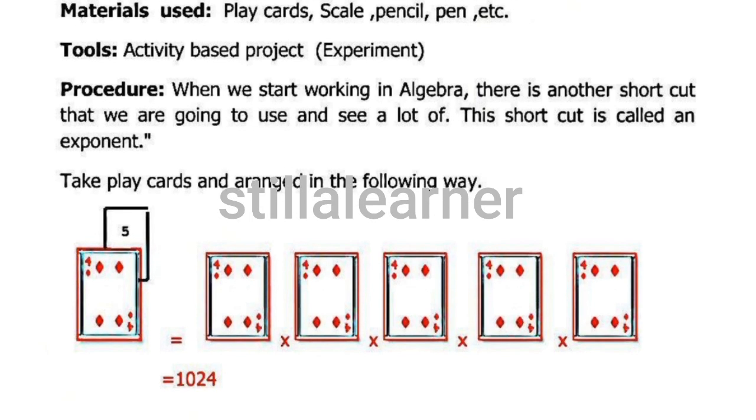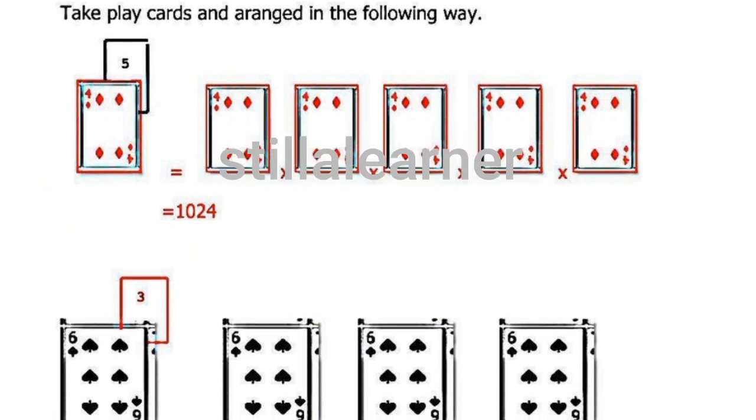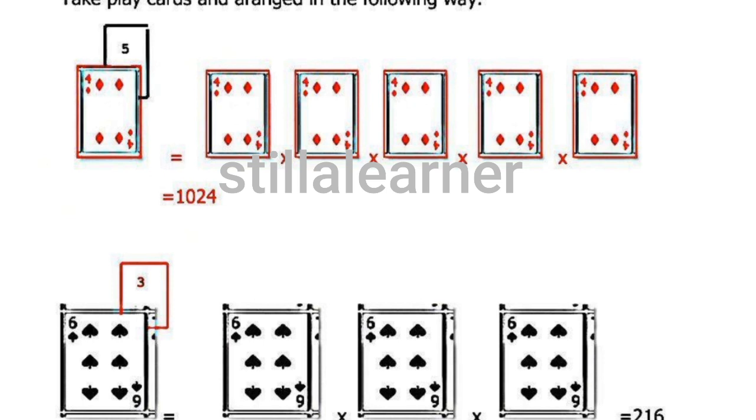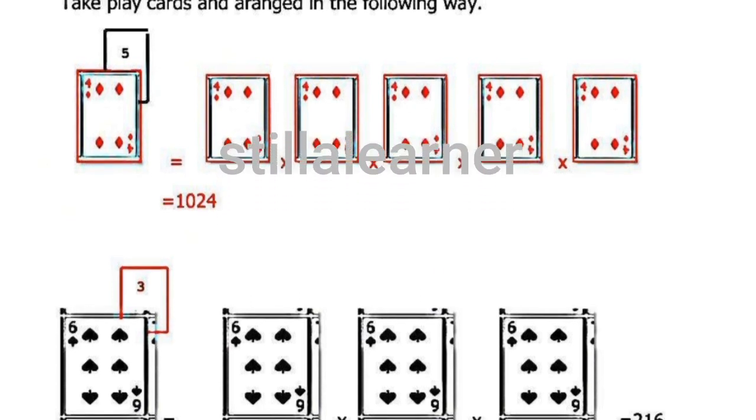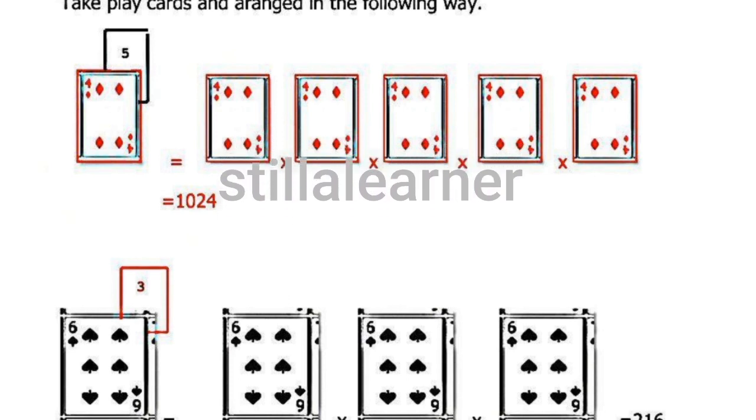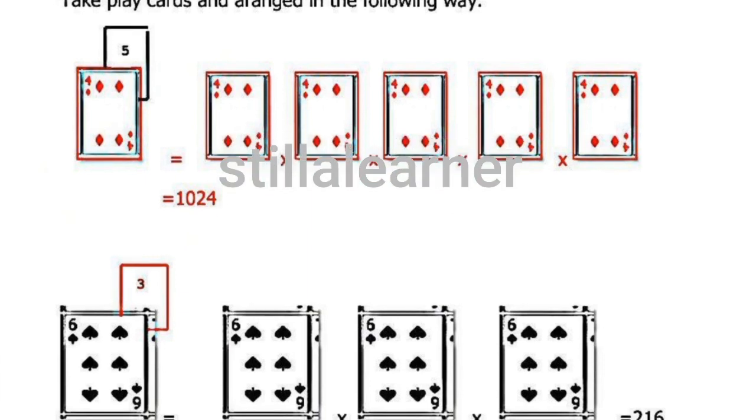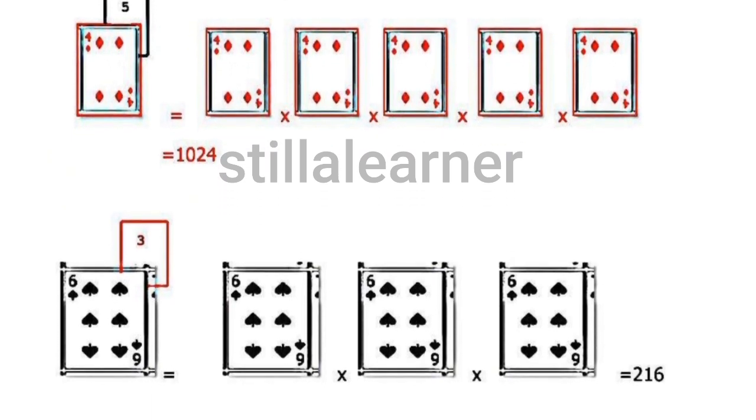Suppose, just look at here, these are the play cards. Do you all know how to play this? So just look at here. Here one card is there. 4 to the power 5 is there. In that way we have to place it five times. 4 to the power 5 means 4 comes five times, and the answer is 1024.